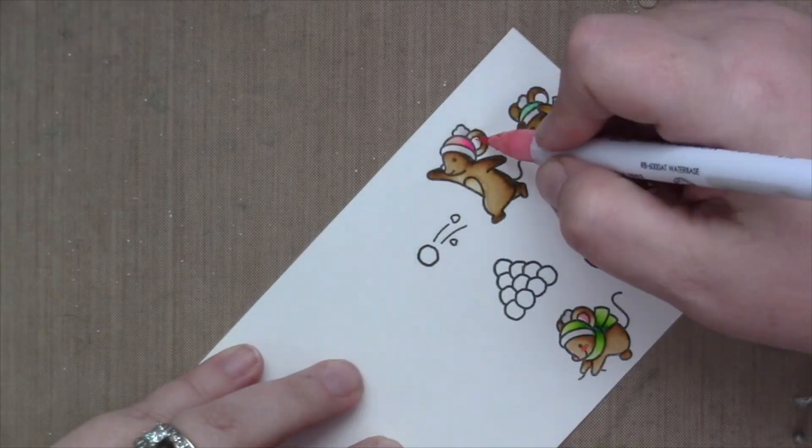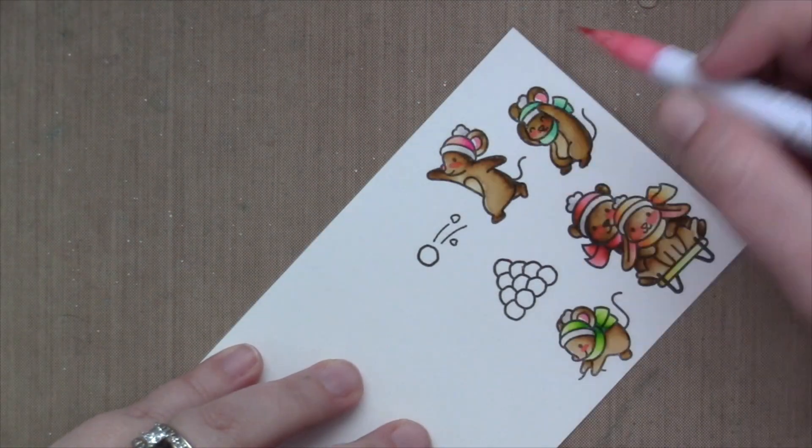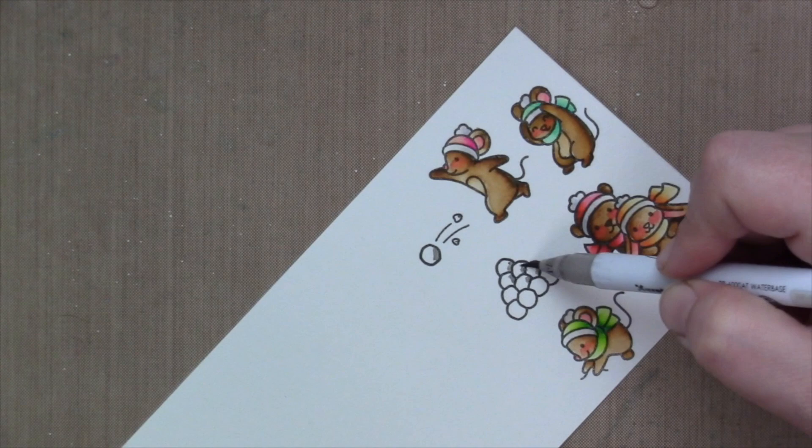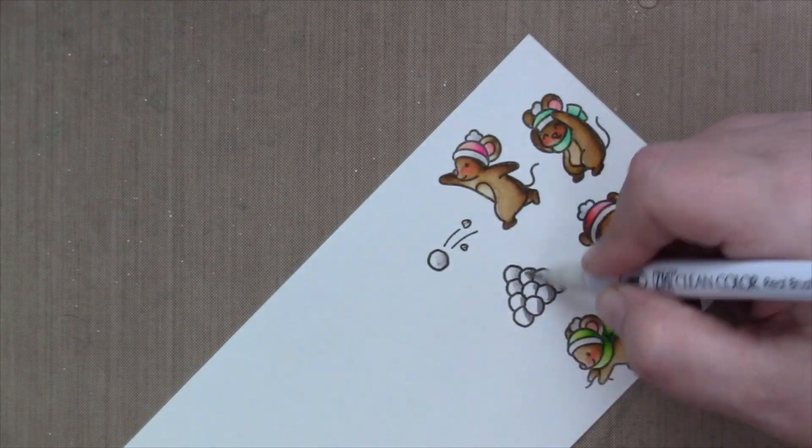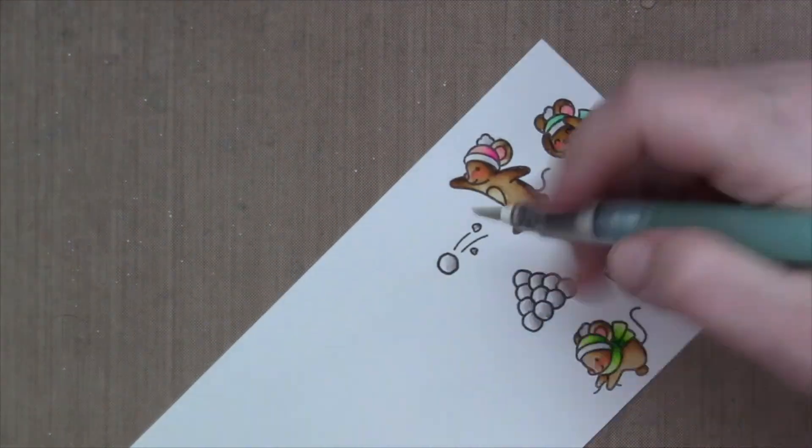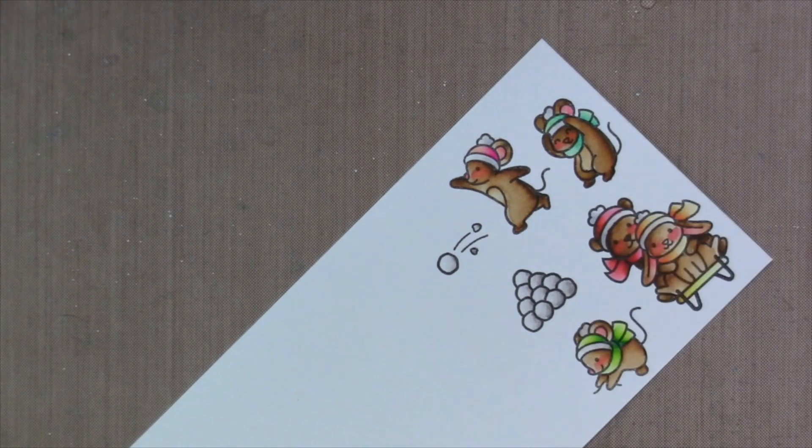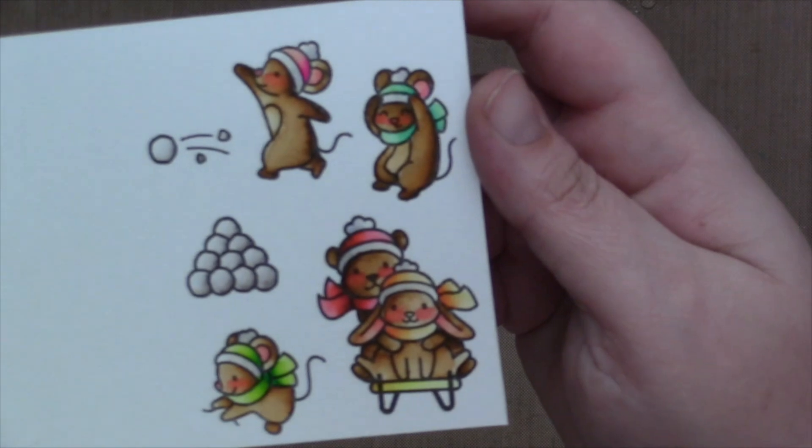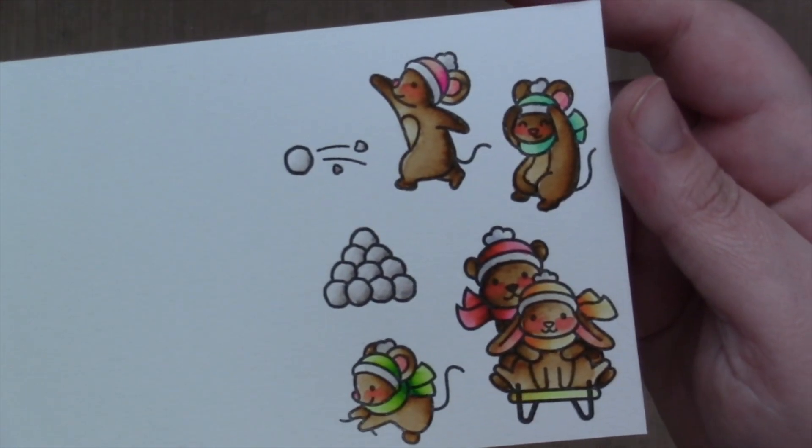All of my critters got pink cheeks and I colored the snowballs with just a little bit of gray so that there was a little bit of color and it was really simple coloring since the images are so small, but just adorable. I do end up adding some white gel pen details, just a few here and there.